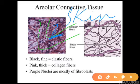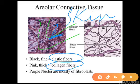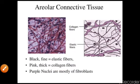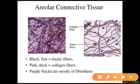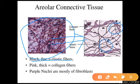In areolar tissue there are two types of irregular fibers: the white ones are made up of collagen fiber and the yellow ones are made up of elastin. In the diagram, the black fiber is the elastic fiber and the pink fiber is the collagen fiber. This can be seen in both the regular and the microscopic diagram.